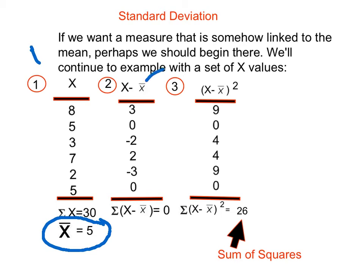If we go to column two, we see that it's labeled X minus X̄. So we're going to subtract the mean from every value in the distribution. So we have 8 minus 5 gives us a value of 3, 5 minus 5 gives us a value of 0, and so on. The problem, if you remember, is that when we do this, the values will wind up adding up to 0, and if they add up to 0, then there's not much we can do with a sum of 0 there.